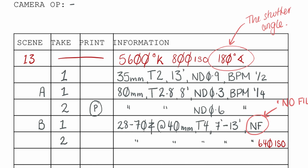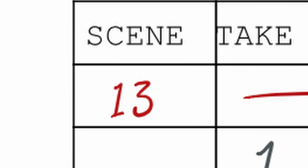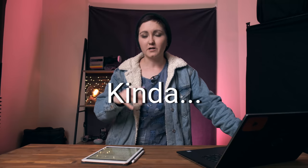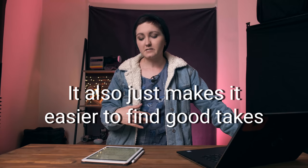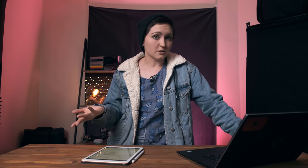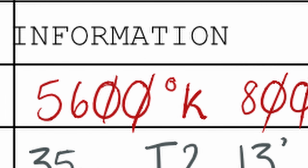There are four columns in my example. You have the scene, the take, and the print. Print is whether it was a good take — which one you're going to print. That also comes from film days when it might have been difficult to telecine everything and you'd need to pick and choose which takes were going to be telecined. It's kind of fallen out of use, but it's still a thing and does get used sometimes. Next to that, you've got the information column — all of the camera information you'll need to put in there.